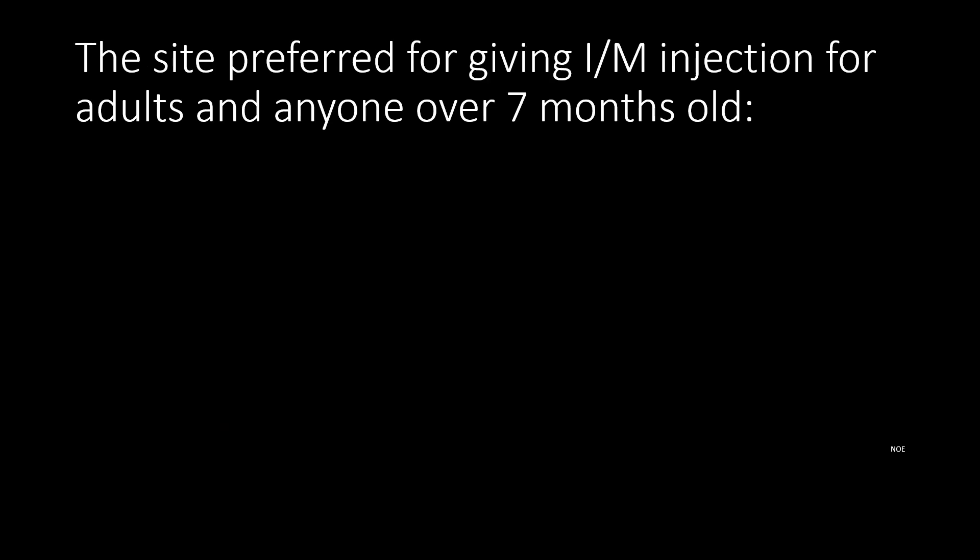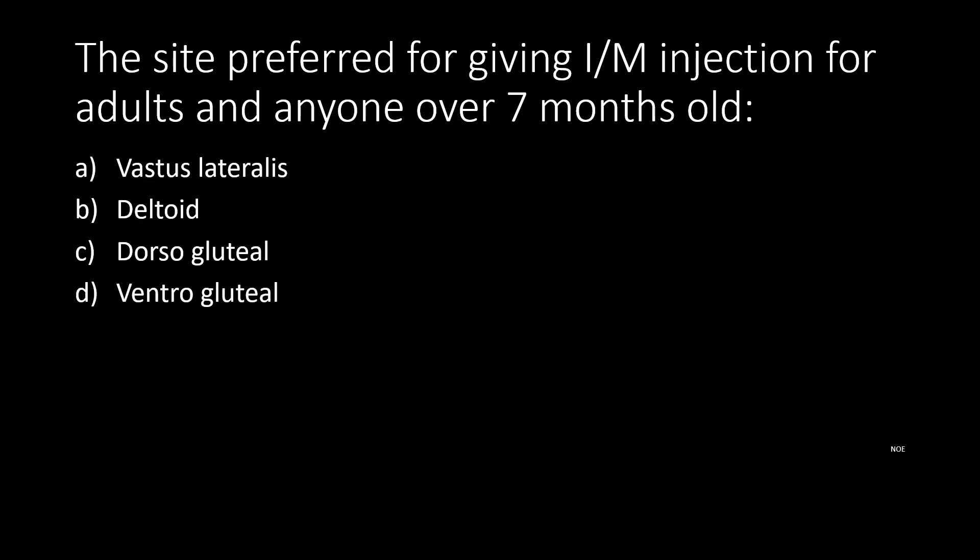The site prepared for giving IM injection for adults and anyone over 7 months old: options are vastus lateralis, deltoid, dorsogluteal, or ventrogluteal. The answer is ventrogluteal.